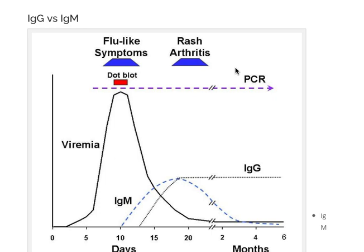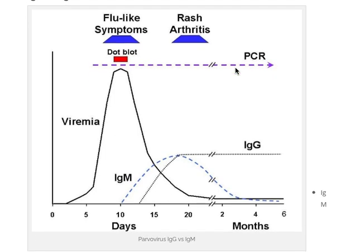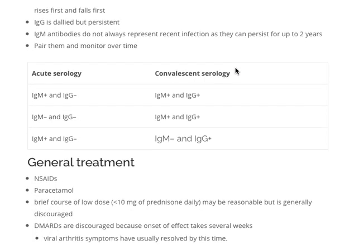A little about IgG and IgM: IgM rises first and falls first, while IgG is delayed but persistent. Sometimes IgM antibodies don't always represent recent infection because they can persist in some viral arthritis diseases for up to two years. You can pair them and monitor over time. In the acute phase, IgM may be positive or negative, but IgG will generally be negative. In the convalescent phase, both IgM and IgG become positive, and then over time IgM drops off, leaving IgG positive.